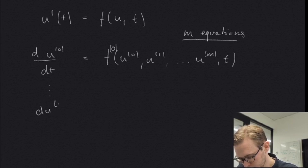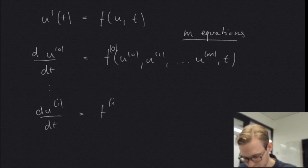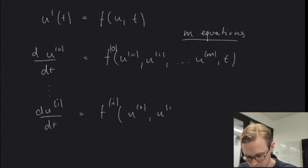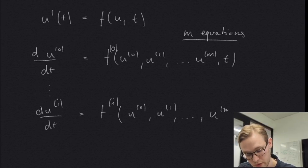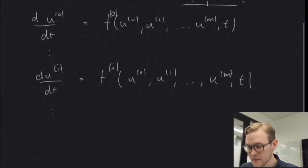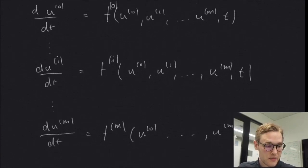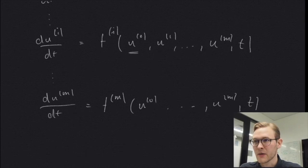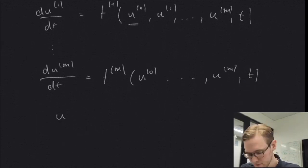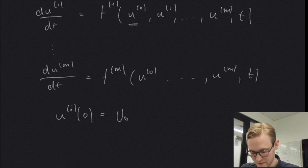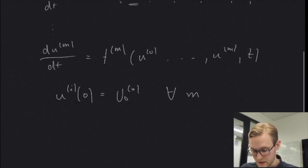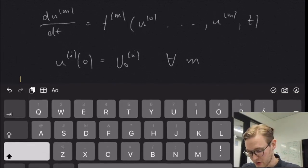The i-th equation will look exactly the same, but it might be some other function that also depends on u_0, u_1, all the way up to u_m, and it continues like this up to the derivative of u_m. That's the sort of system we should be able to solve, and of course each of these equations will need an initial condition — the zero value must be a specific value — for all m equations.